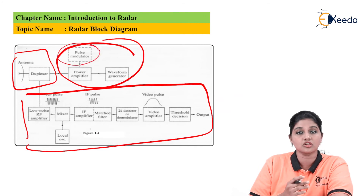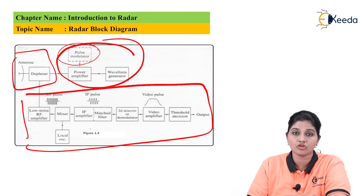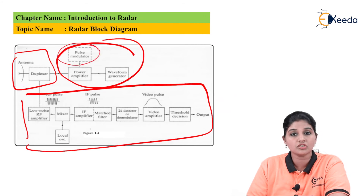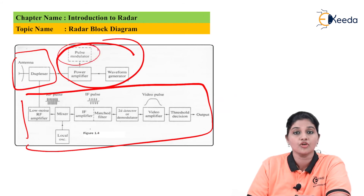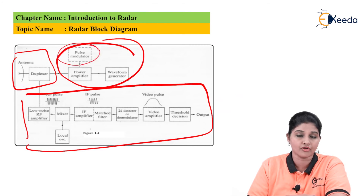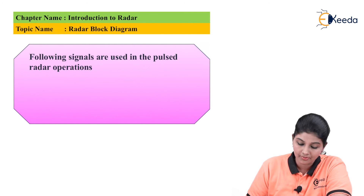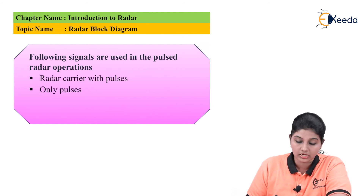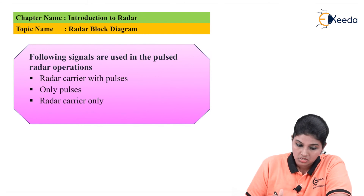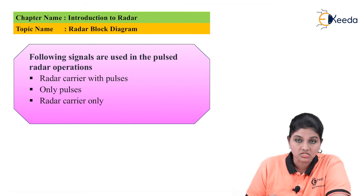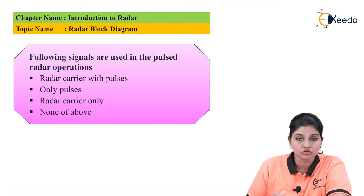If the value is less than the threshold decision value, noise is assumed to be present in the signal. It is critical to decide the threshold levels for detecting the presence or absence of the target. This completes the block diagram of the radar system, which consists of three main parts: transmitter, receiver, and RF front end. Now let's move on to the MCQ part. The first question is: which signals are used in pulse radar operation?